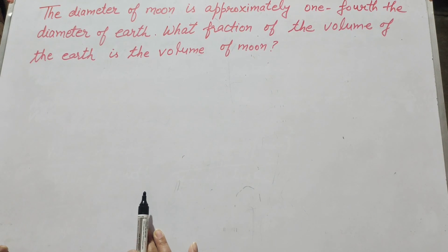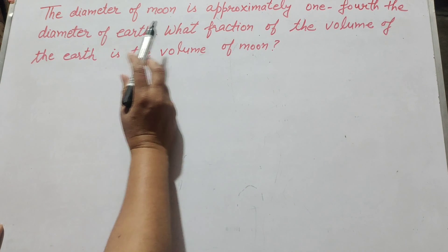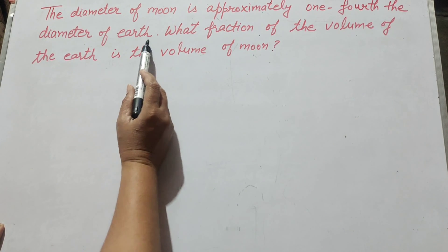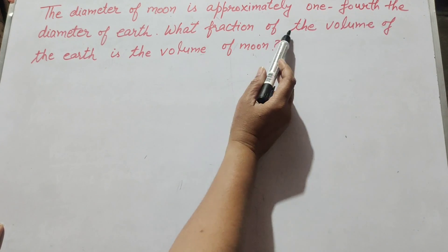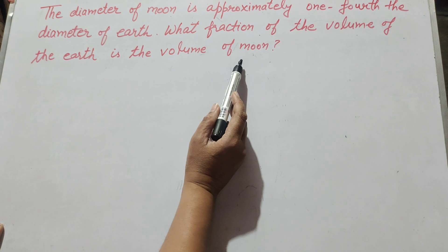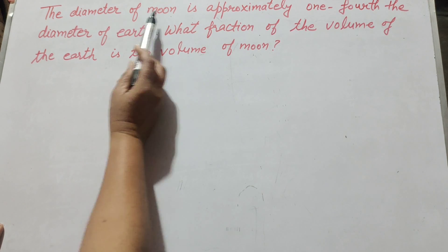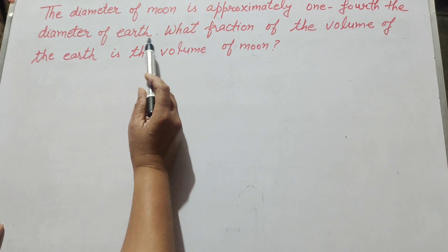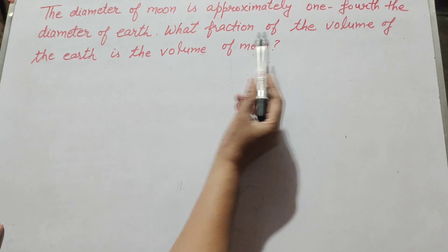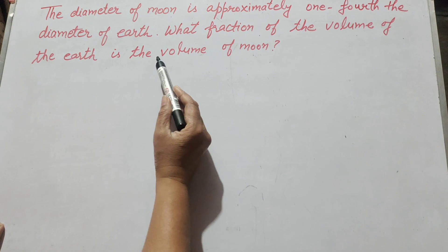Hello friends, welcome to my channel. In this video we discuss the question: the diameter of the moon is approximately one-fourth the diameter of the earth. What fraction of the volume of earth is the volume of moon? So in this question, the diameter of moon is one-fourth the diameter of earth, and we find the fraction of volume of earth to the volume of moon.